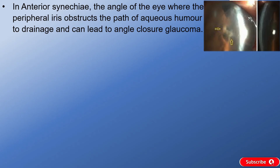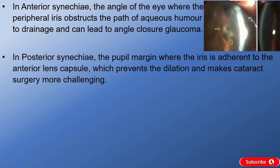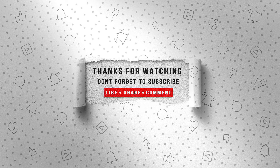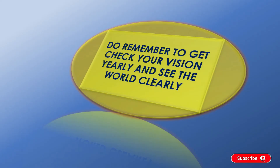In posterior synechia, the pupil margin where the iris is adherent to the anterior lens capsule prevents dilation and makes cataract surgery more challenging. I hope this information will be helpful for you. Thank you for watching. Stay tuned for more updates and don't forget to like, share and subscribe. Please do remember to get your vision checked yearly and see the world clearly.